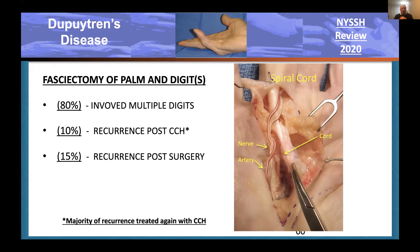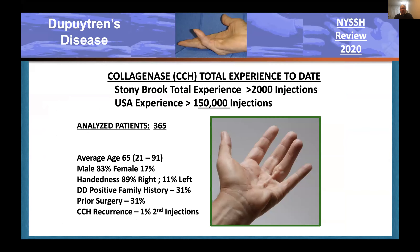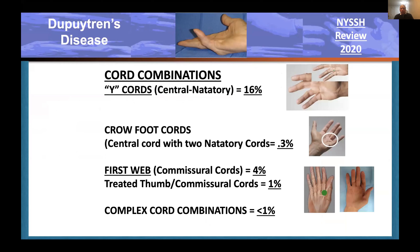Fasciectomies have been done in my hands for multiple digits, some recurrence post-collagenase, and recurrence post-surgery. A majority of recurrences I've dealt with, I've just repeated the collagenase. Here are some examples: a patient with a large central cord to the finger, the so-called Y-cord which is a coalescence of a central cord and a natatory cord, a crowfoot cord where there's a central cord and two natatory cords going to adjacent fingers causing web contracture, and a small percentage of very complex cords that don't follow typical patterns.